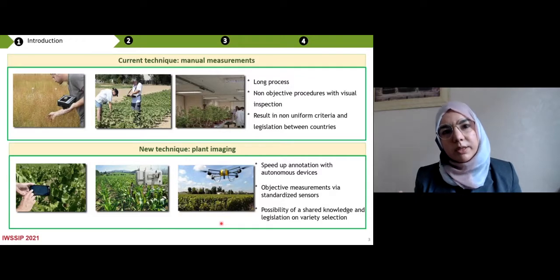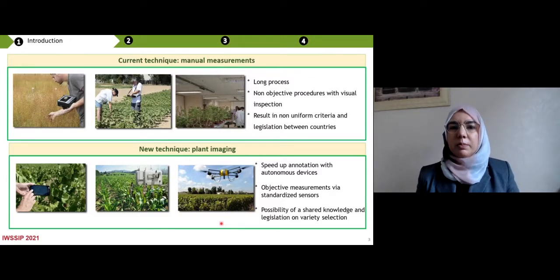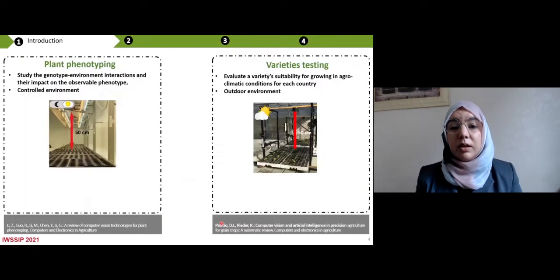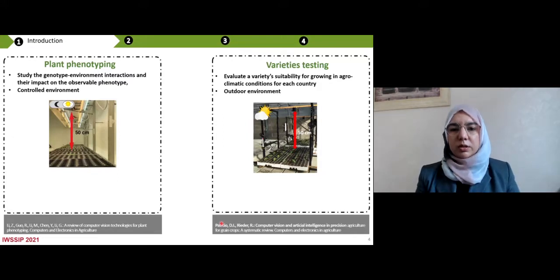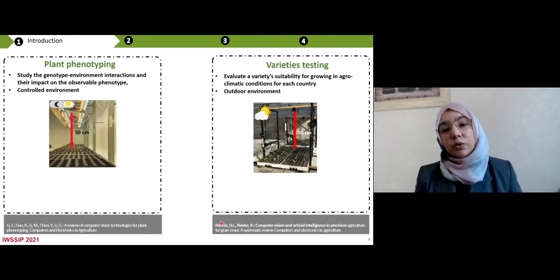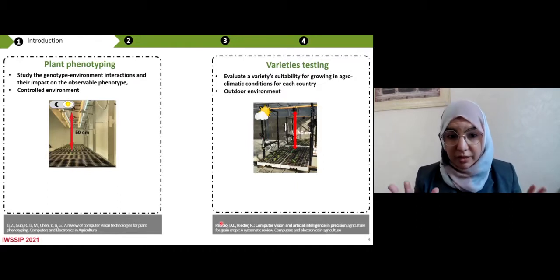Plus, give the possibility to share knowledge and registration on variety selection. So which community are concerned by plant imaging? We have two main sub-community. The first one is plant phenotyping. They study the genotype environment and direction and their impact on the observable genotype, and they work in control environment. The second one is the varieties testing. So they evaluate the varieties stability for growing in agro-climatic condition for each country. For that, they work in outdoor environment.